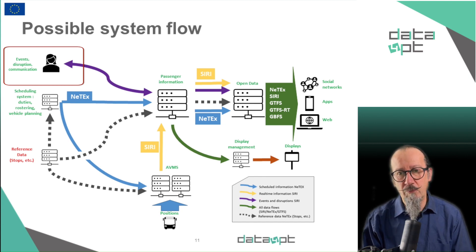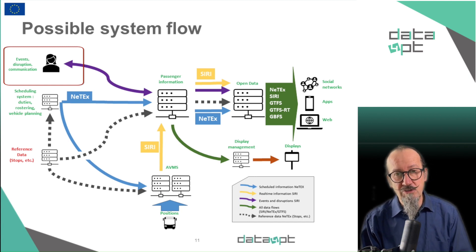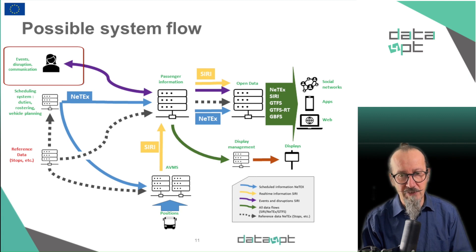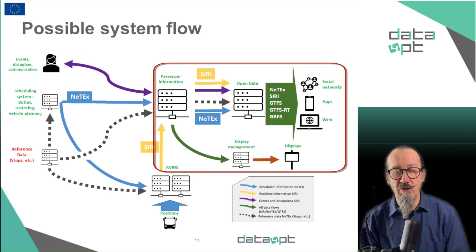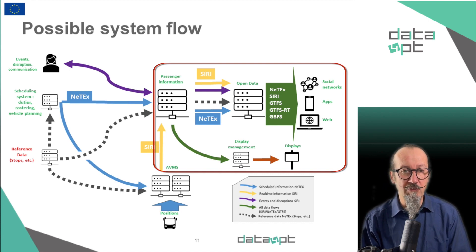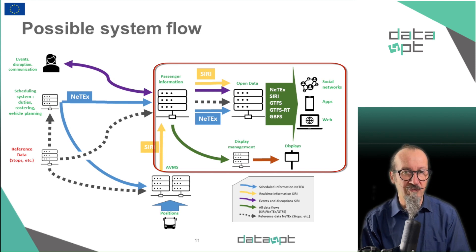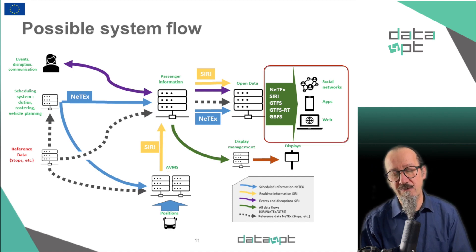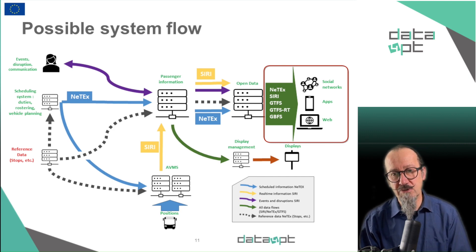There may also be, as you can see on the upper left of the schema, some physical operators capturing information about events, about distribution, or managing communication, and they obviously need to exchange the information they are creating. Here, once again, NetX and Siri can carry that information in a standardized and harmonized way. Passenger information systems will collect information from all these other systems, and from it they will provide data to trip planners, websites, and displays, or create paper information. At that stage, converting the NetX or Siri data to GTFS or GTFS-RT is also a good idea in order to fit data to legacy systems, usually using a reduced functional scope.